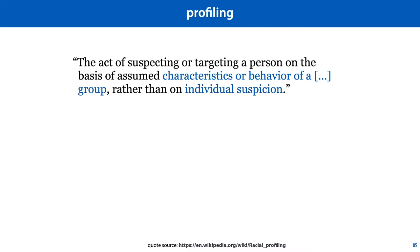When we suspect people of a crime or target them for investigation based on their membership of a group rather than based on their individual actions, that's called profiling. Probably the most common form is racial profiling, which is when the group in question is an ethnic or racial group. Examples include black people being more likely to be stopped by police, or Arabic people being more likely to be checked at airports. Other forms of profiling, such as gender or sexual orientation profiling, also exist in various contexts.